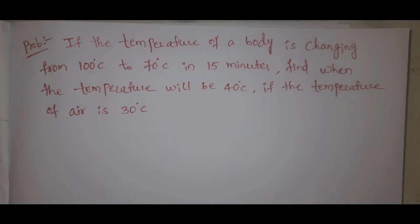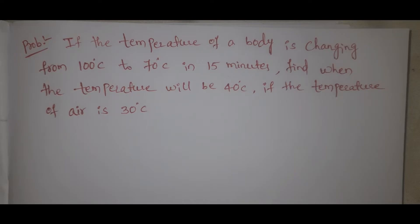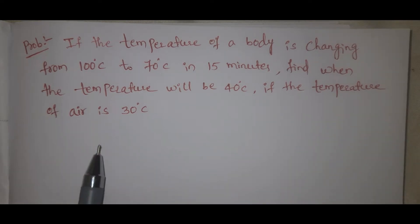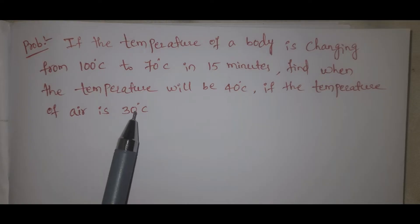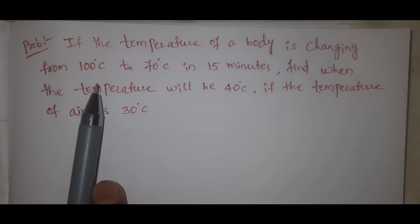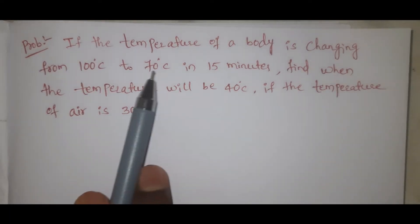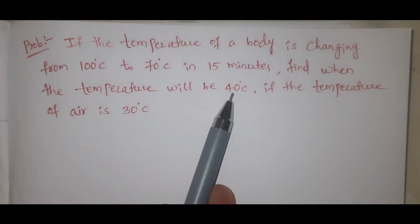If the temperature of a body is changing from 100 degrees to 70 degrees centigrade in 15 minutes, find when the temperature will be 40 degrees. The surrounding temperature is 30 degrees centigrade. At initial time t equal to 0, theta is 100. At t equal to 15, theta is 70 degrees. We need to find t when theta equals 40 degrees centigrade.